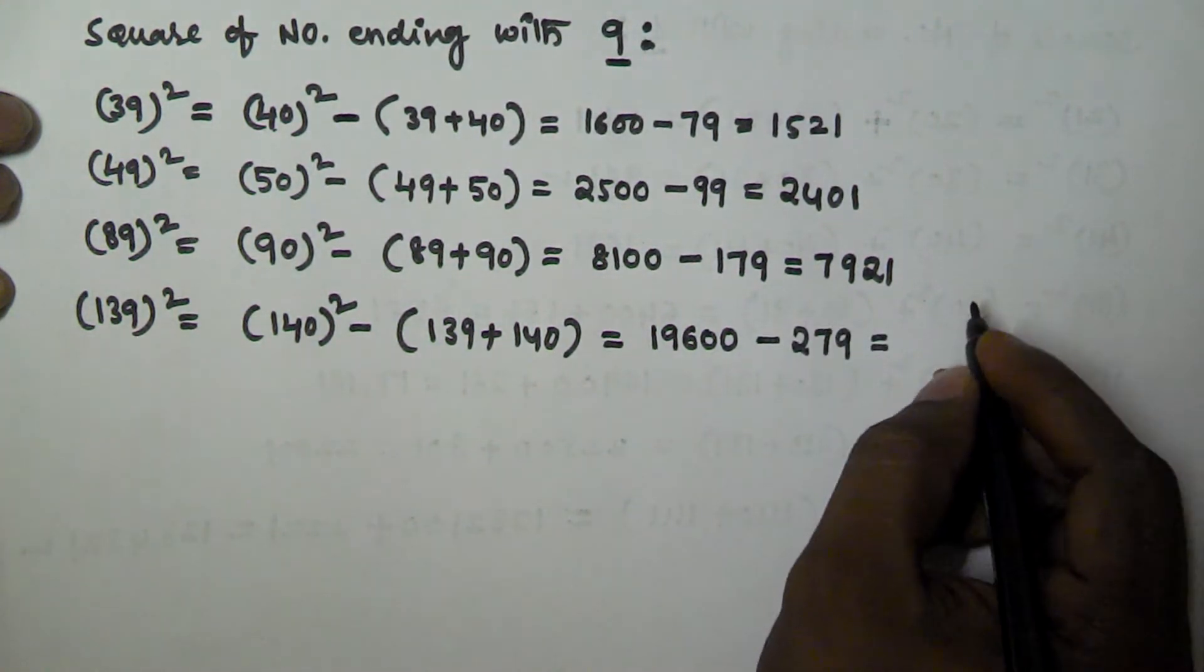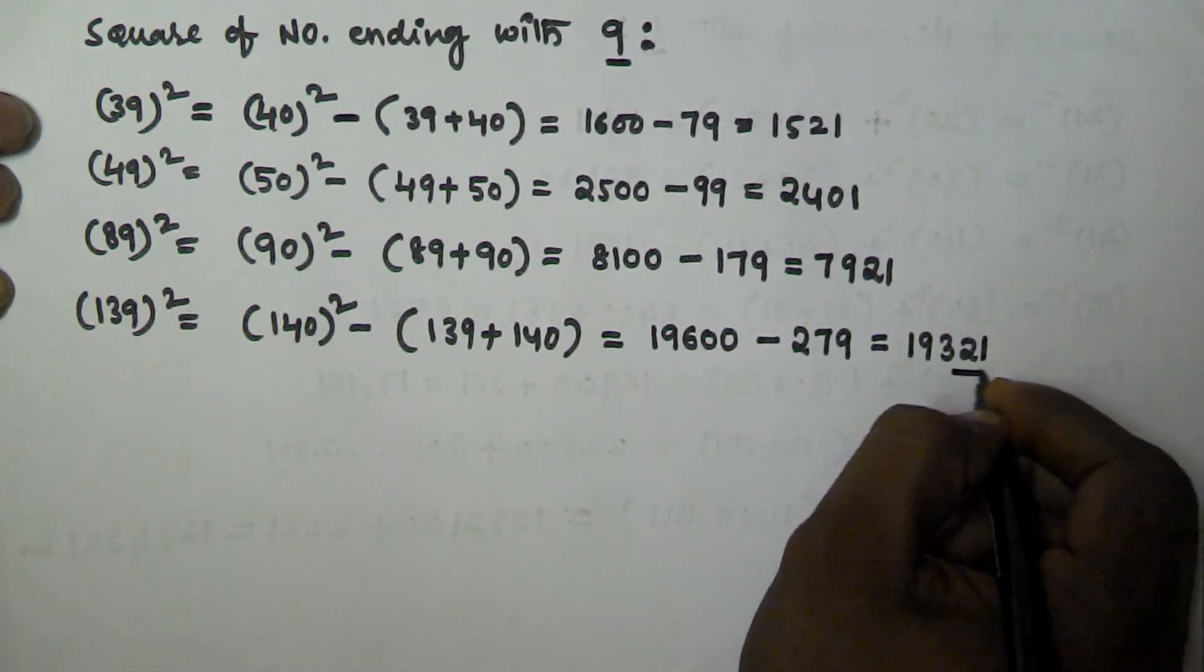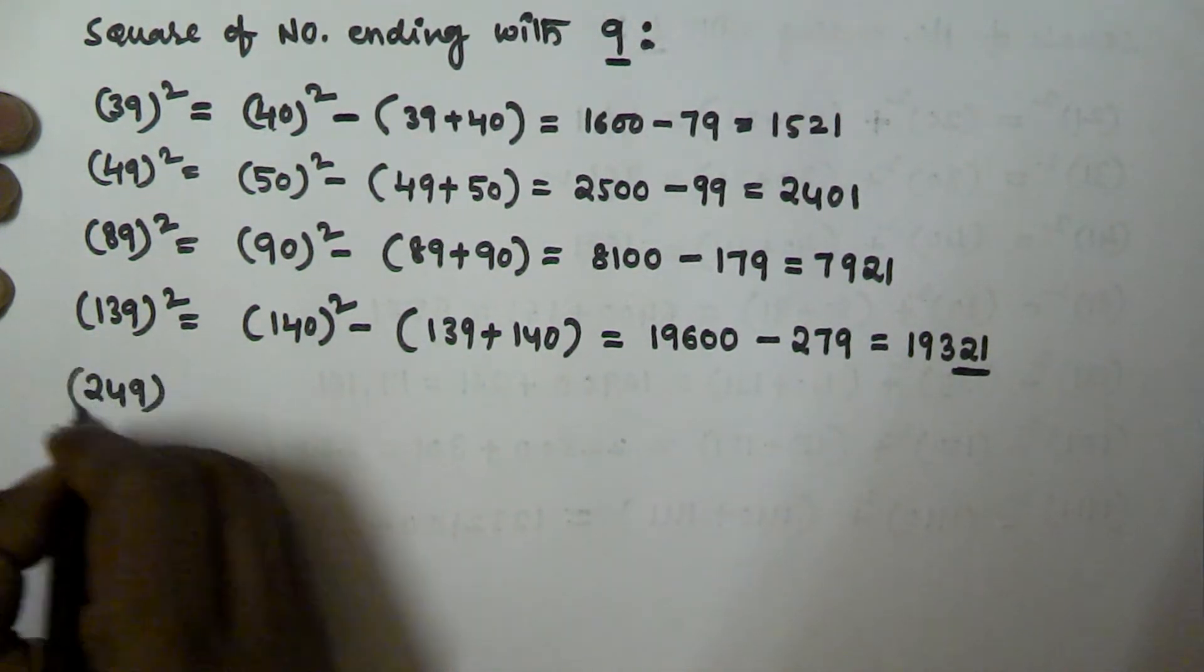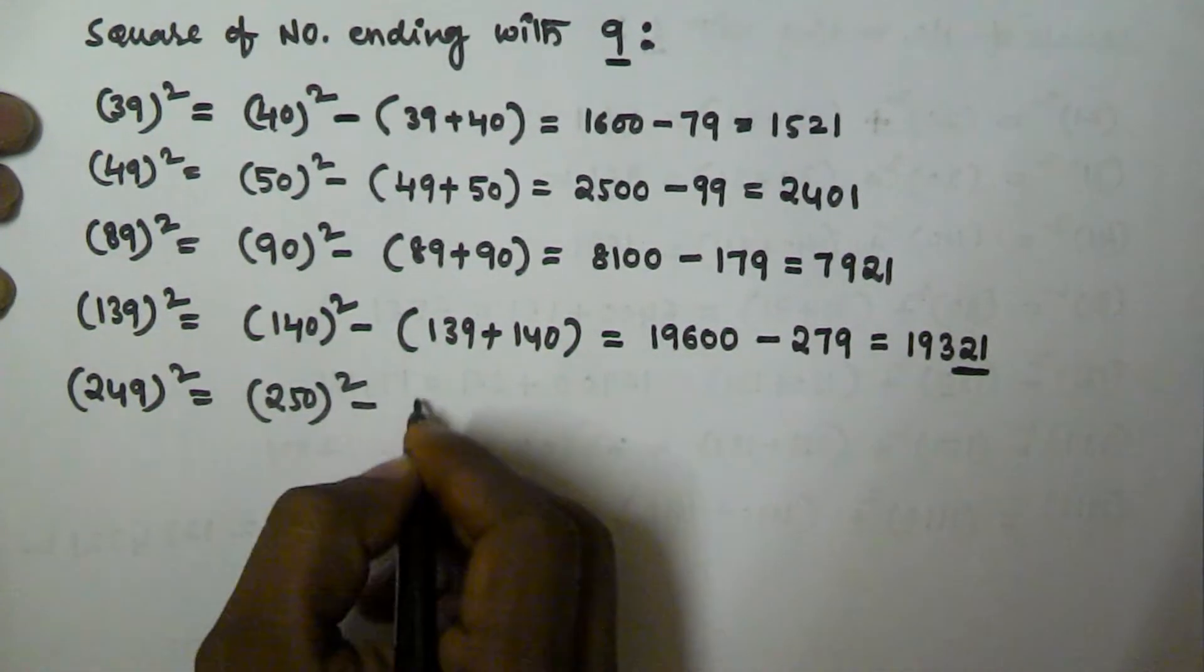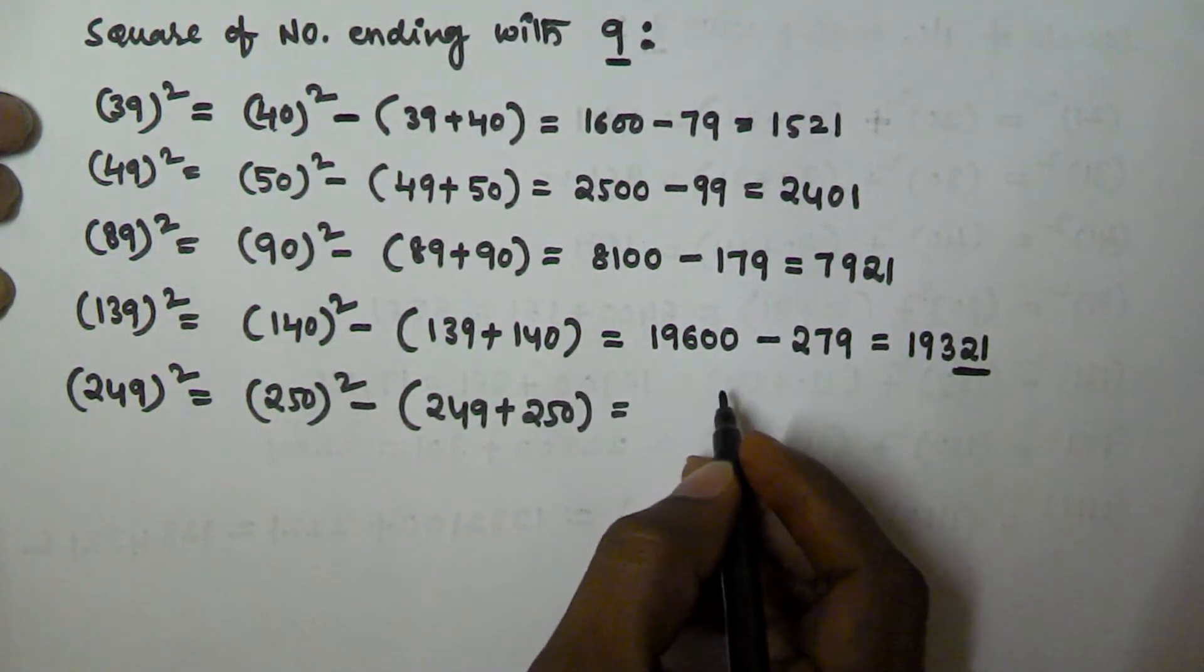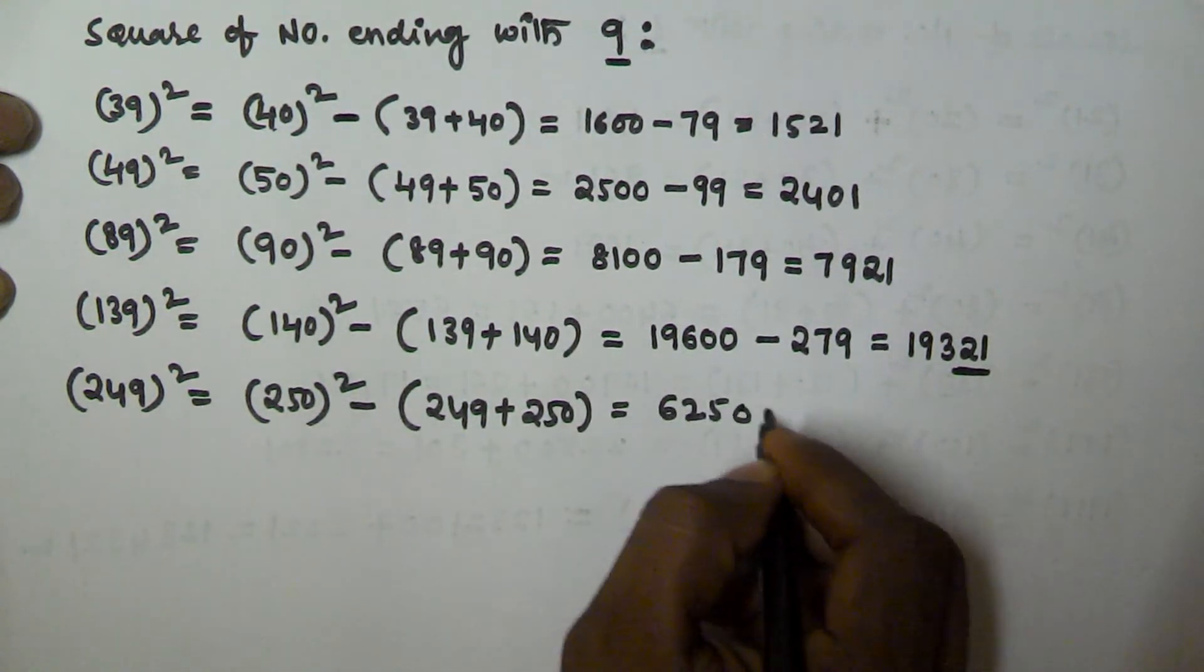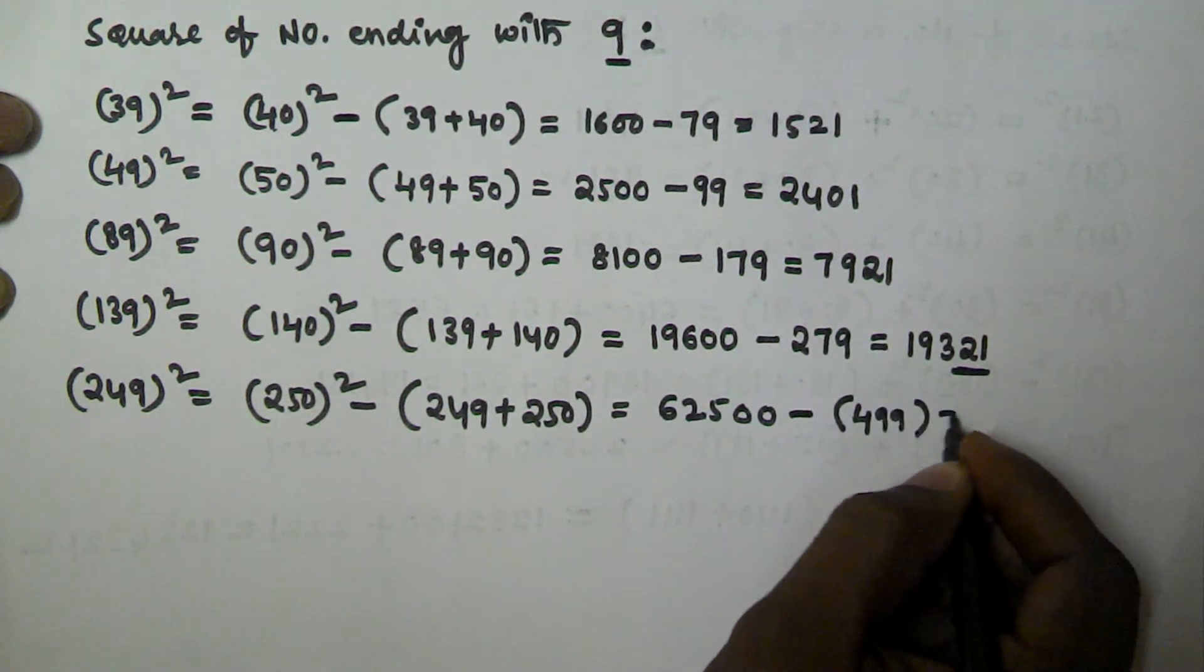Now 249 square is equivalent to 250 square minus 249 plus 250. This equals 25 square is 625, so it contains one 0 and two 0s, minus 249 and 250, that is 499. So equivalent to 62001.